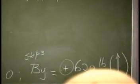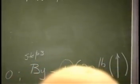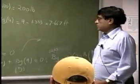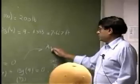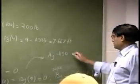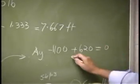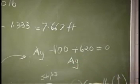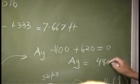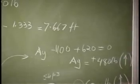So now, you are solving for the unknowns from your equation. Then, we go here. And since you already have By, so you have Ay minus 1100 plus 620. That will go to 0. And that should give you the reaction Ay. And that should be 480 pounds. Again, that is positive, so it continues to go up.